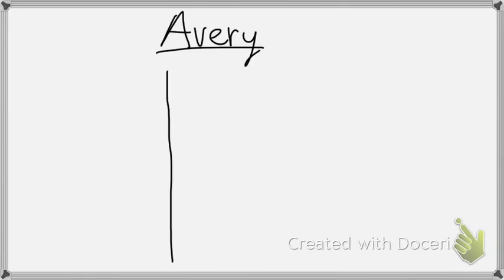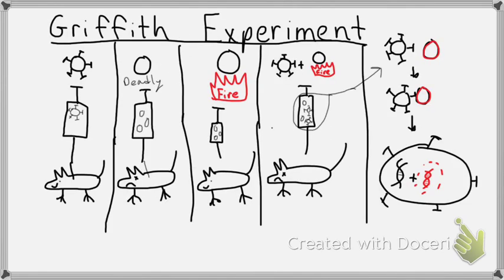Here's an example of how Avery's experiment was done. And to keep it consistent, we're going to use rats in this too. So here's Avery's experiment. He took the idea of a transforming factor that was figured out by Mr. Griffith. Here's Griffith's experiment.